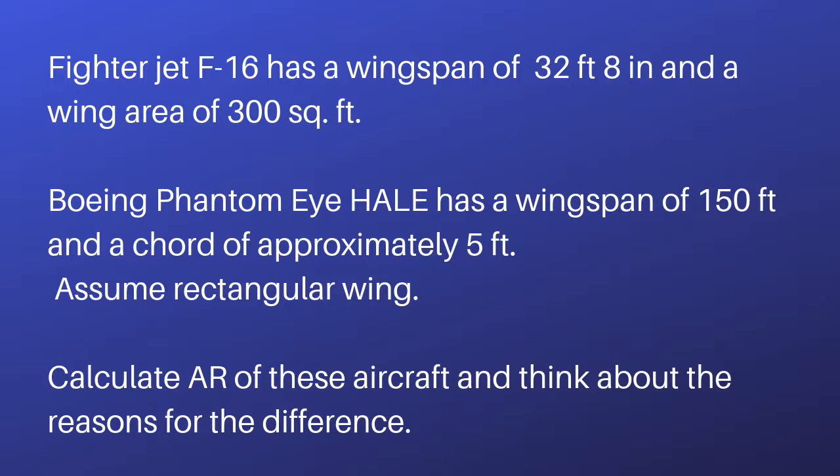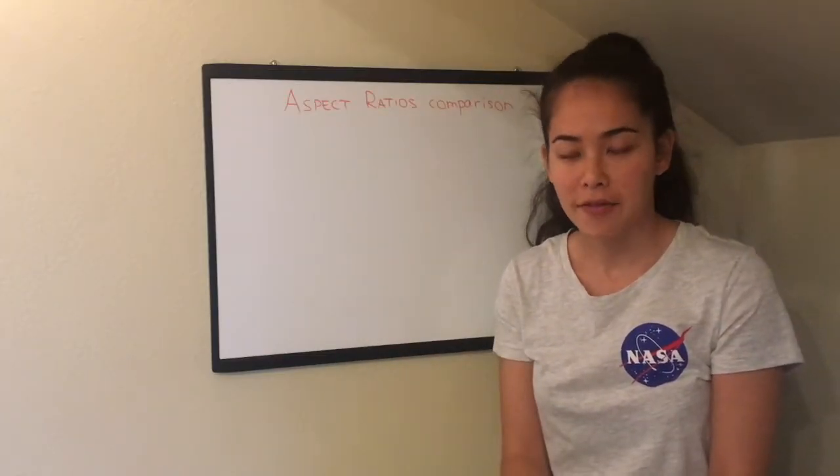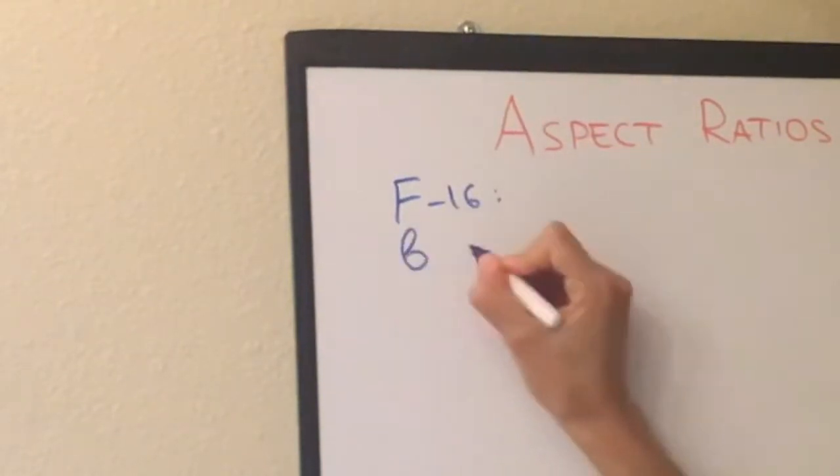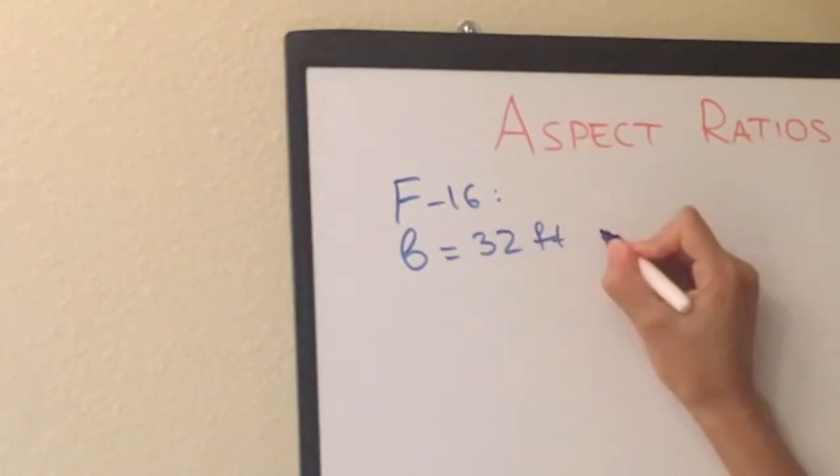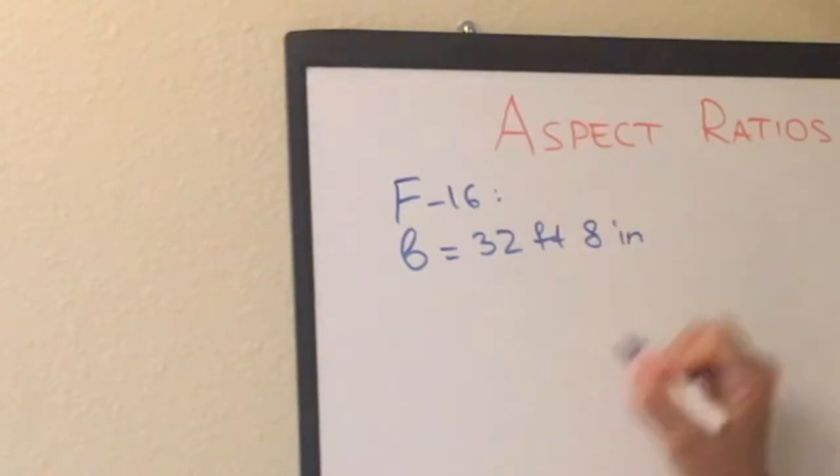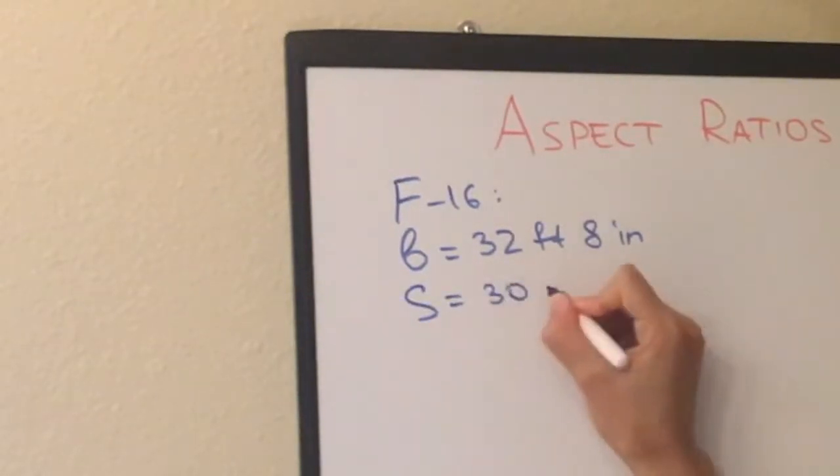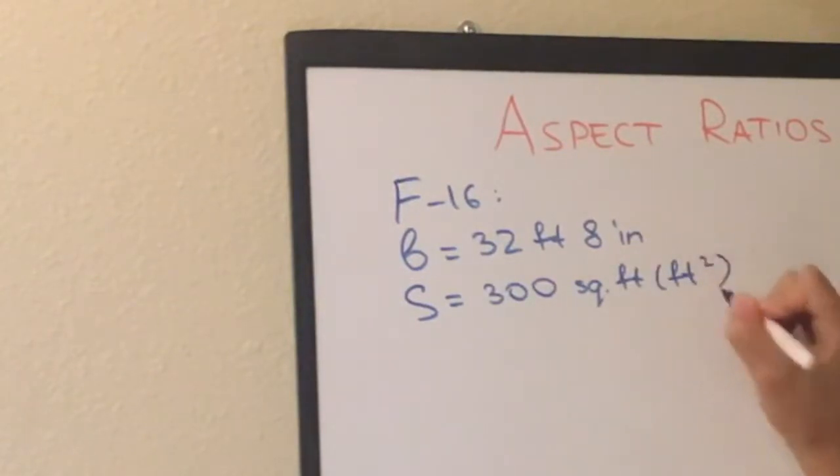Now we need to calculate the aspect ratios of these two aircraft and think about the reasons for why they're different. So let's write down what we're given. For F-16 we have a wingspan of 32 feet and 8 inches and a wing area of 300 square feet.